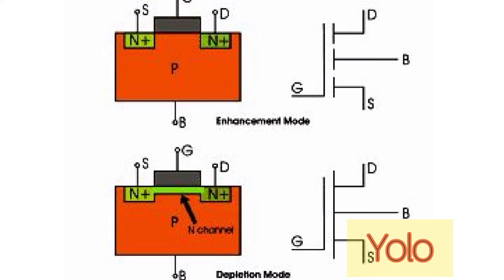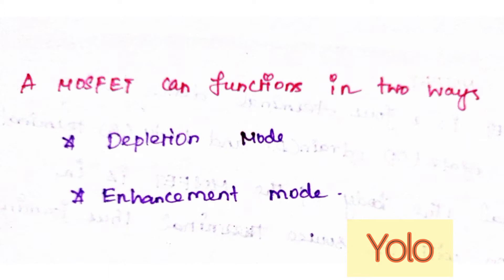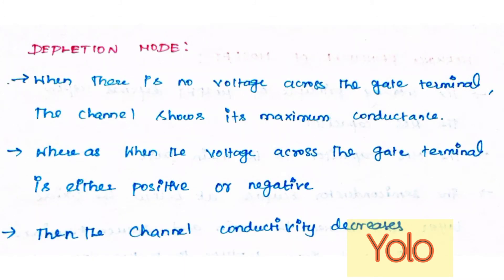It is insulated from the channel near an extremely thin layer of metal oxide. So MOSFET can function in two ways: first one, depression mode, and second one, enhancement mode. In depression mode, there is no voltage across the gate terminal.